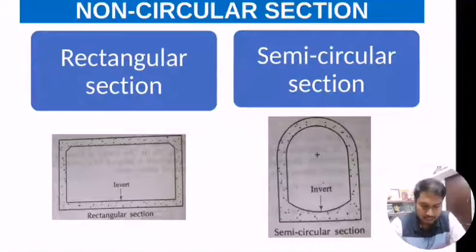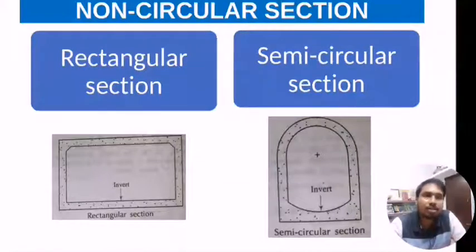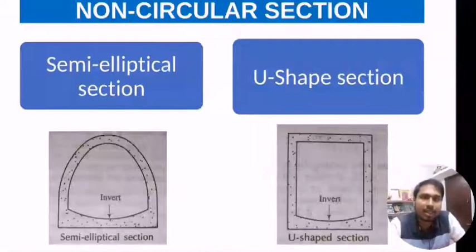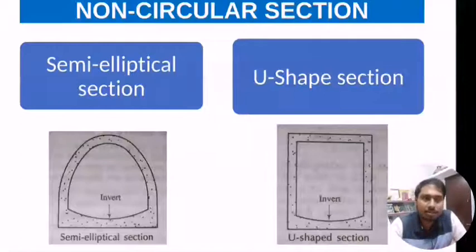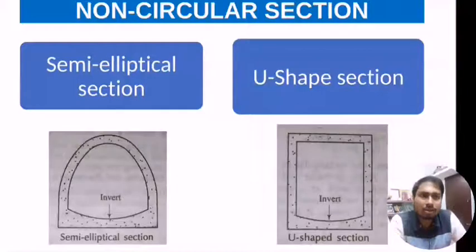The semi-circular section gives a wide base at the bottom and is suitable for constructing large sewers with less available headroom. The semi-elliptical section is generally used where the soil is soft.